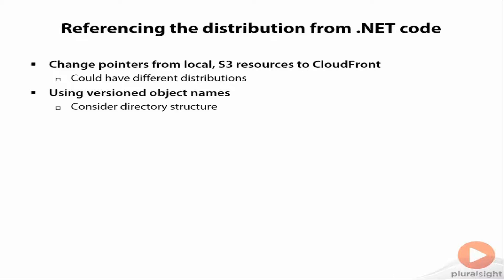One recommended strategy is to use versioned object names and create the appropriate directory structure — maybe you've got a v1, a v2, and a v3. You could use either a directory structure or a naming structure to reference new logos and things like that. This is one way you can actually get instant updates: when I have a new version, update it in my code, and repush my app, I'm going to instantly start getting the new file, because the first time it's referenced it gets pulled in from the edge location. At some point I can retire the old version of the image, CSS file, or video file.